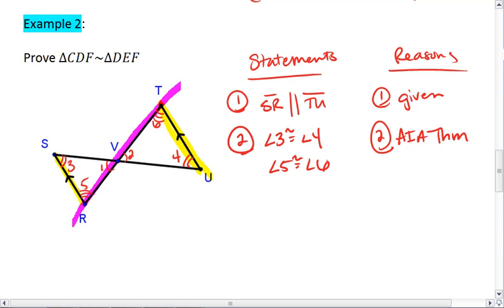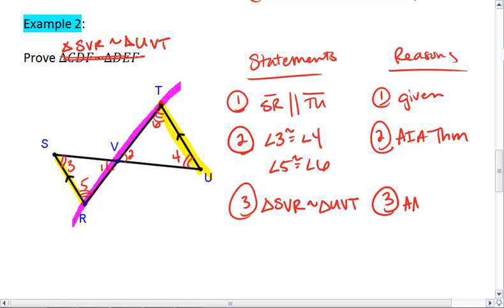If I want to, I can stop right there and go ahead and say that triangle—oh, this shouldn't be CDF. Sorry, this should be triangle SVR similar to triangle UVT. I can now say triangle SVR is similar to triangle UVT. This is by the angle-angle triangle similarity postulate.